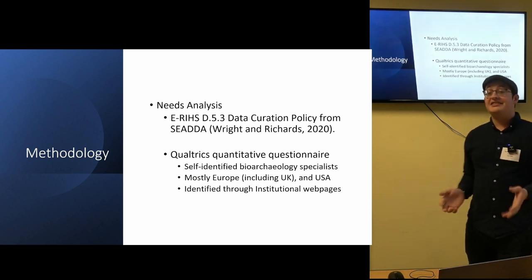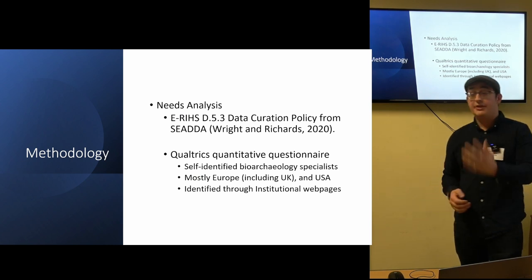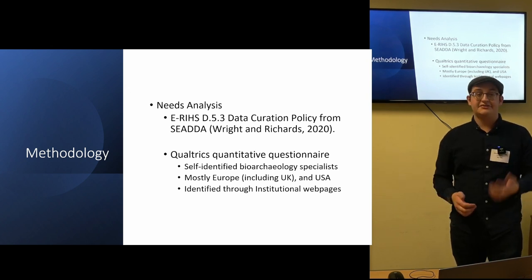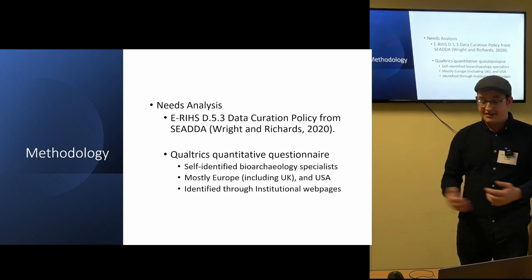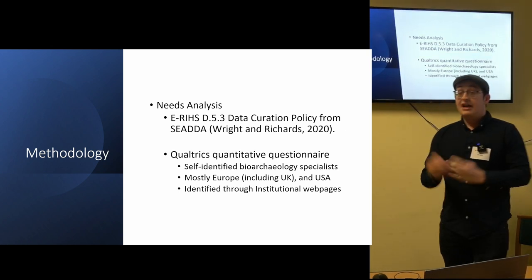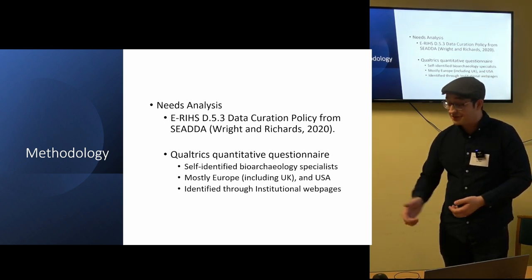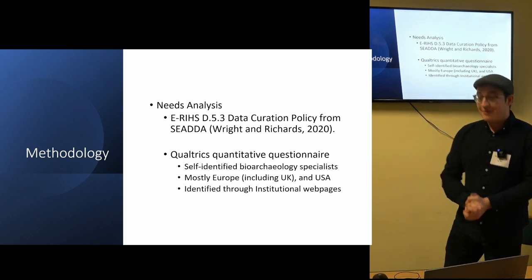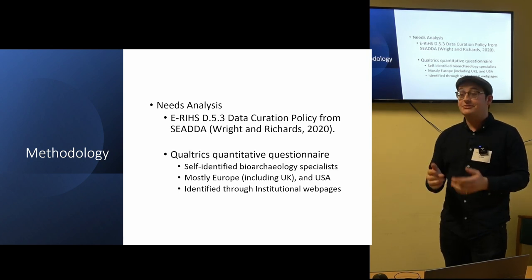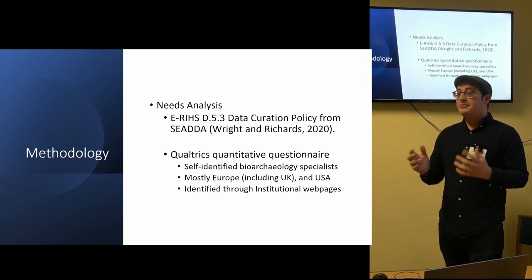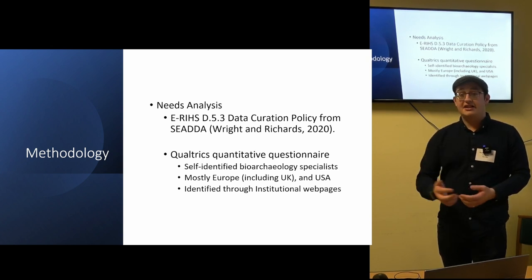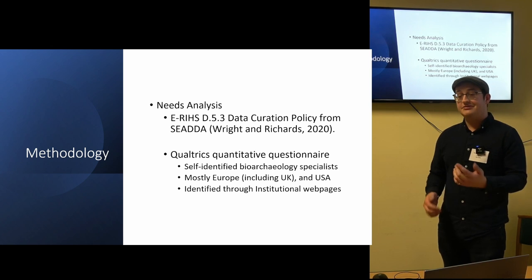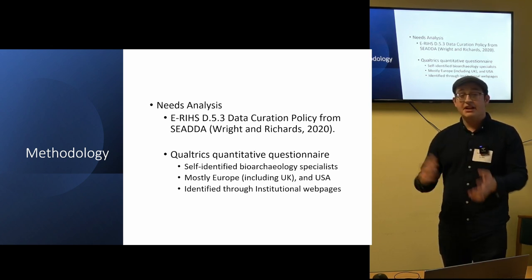So how did I actually carry out the study? Well, I carried out a needs analysis, and to begin with I looked at the E-RIHS D5.3 data curation policy deriving from Saving European Archaeology from the Digital Dark Age. This is written by Holly Wright and Julian Richards in 2020. And from this I generated a Qualtrics quantitative questionnaire, very hard to say. But ultimately this was sent out to many different self-identified bioarchaeological specialists, particularly those who identified through university web pages. I started out primarily focusing on the UK. However, people were very kind and disseminated out further, so as a result I got a lot of results from Europe and also USA, but less from other parts in the world.